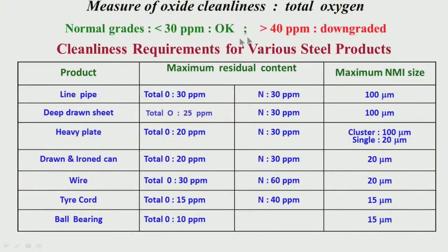But if the level of total oxygen is more than 40 ppm, we downgrade the steel. That means we use the steel not for normal applications, but for some inferior applications as mentioned earlier. So a decision is taken based on total oxygen, which indicates the oxide cleanliness level of steel.